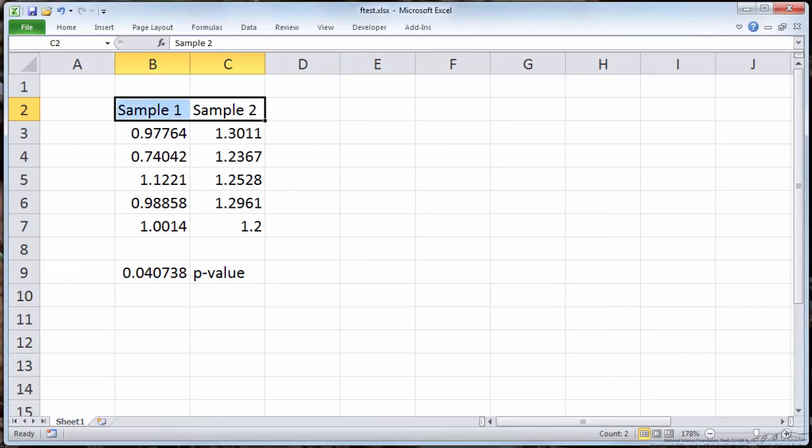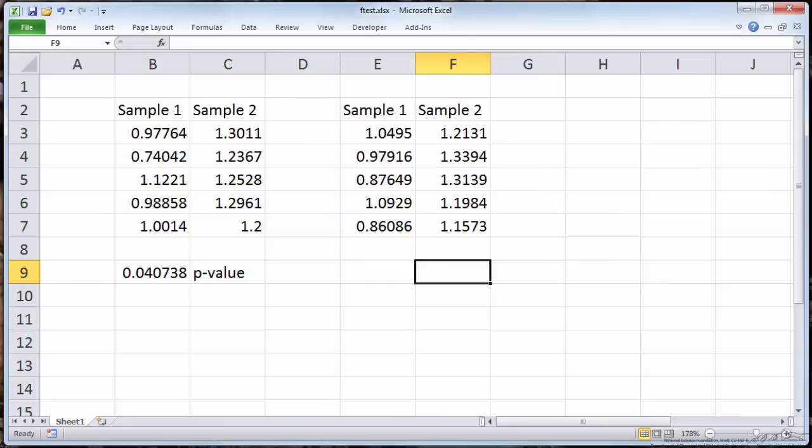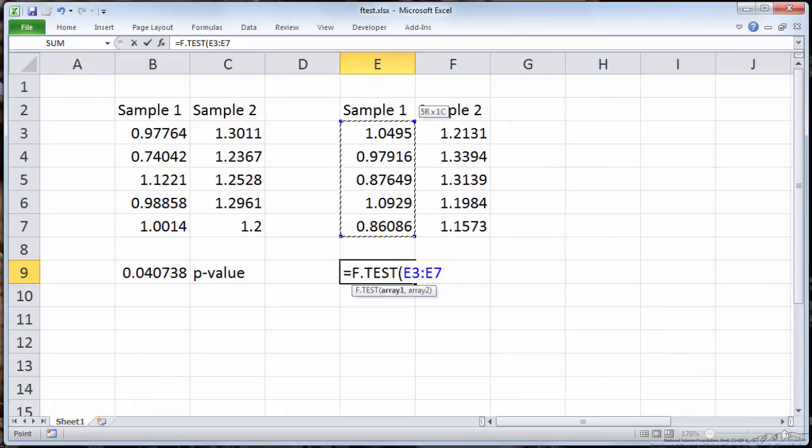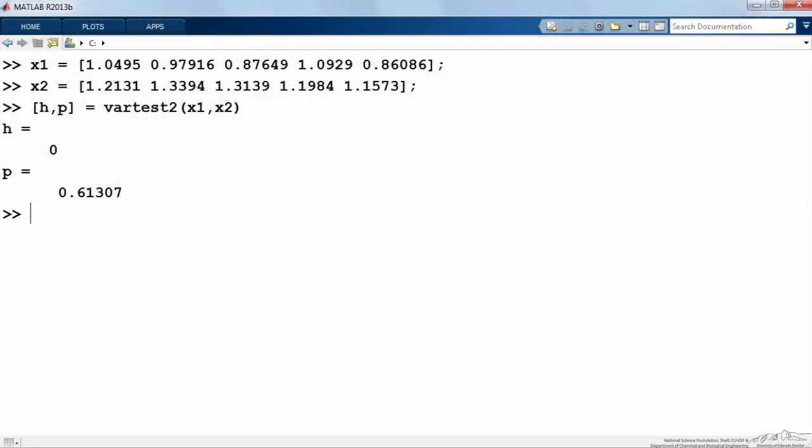I could do the same thing in Excel, let's paste sample one and sample two. I've entered the numbers for the measurements for both samples, we'll put the p value here, and again it's just F.TEST, I'll push tab to auto complete it, select the first array, and select the second array, and that returns the same p value as we saw in MATLAB, this 0.61307.